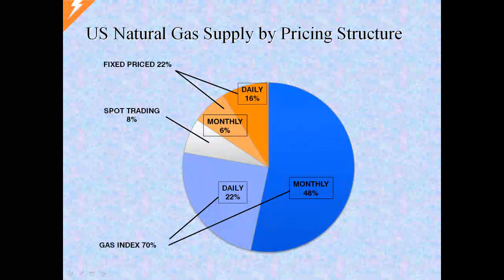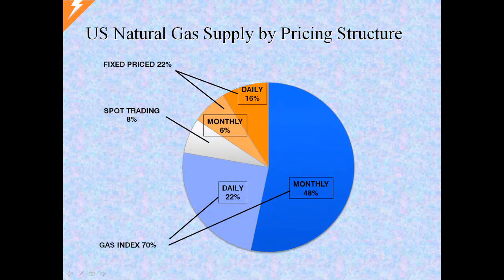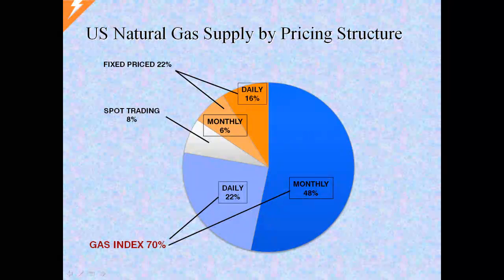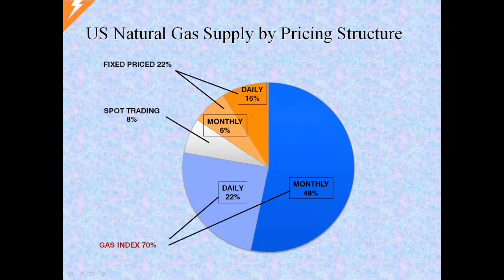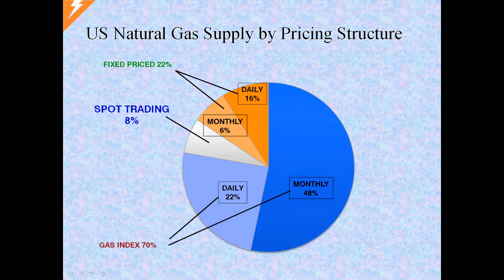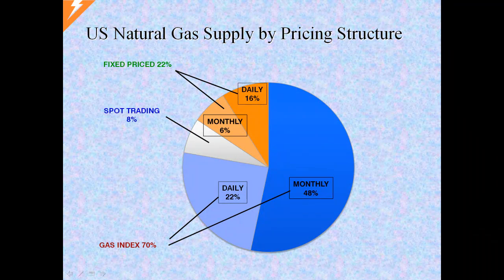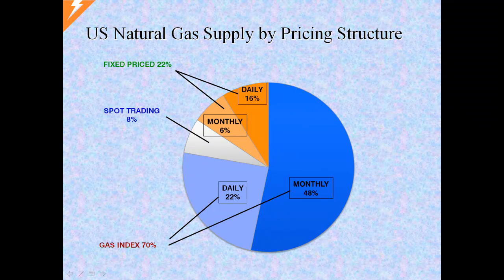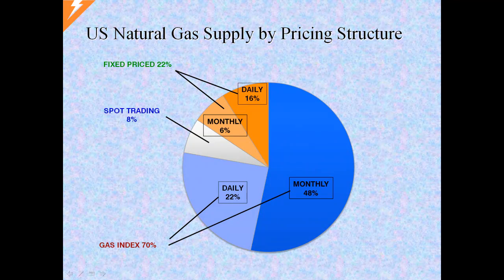Supply contracts priced at index like the one we just looked at are very common in the U.S. gas market. Here we see that 70% of total U.S. natural gas supply is contracted at index pricing. With another 22% contracted at fixed prices, it leaves only 8% of supply left for spot trading. This means that the index price, based on trades that occur in this small 8% spot market, determines the pricing for the vast majority of gas supply in the U.S.